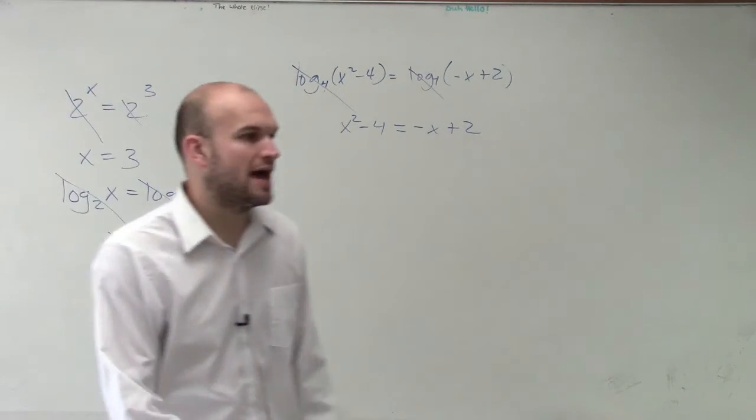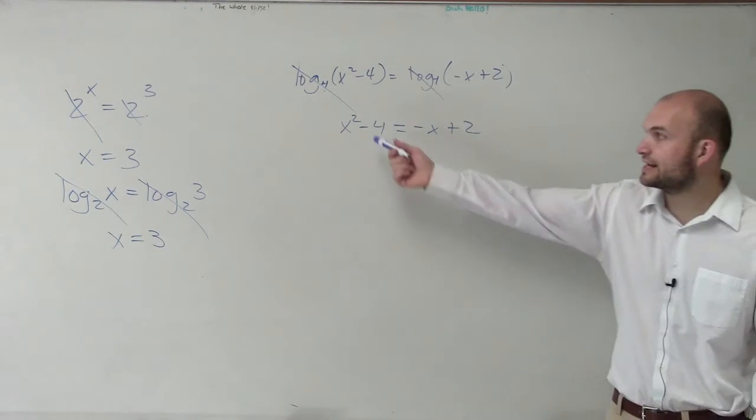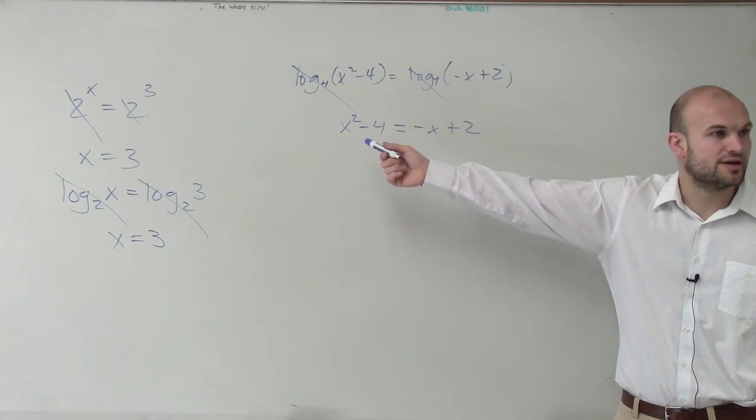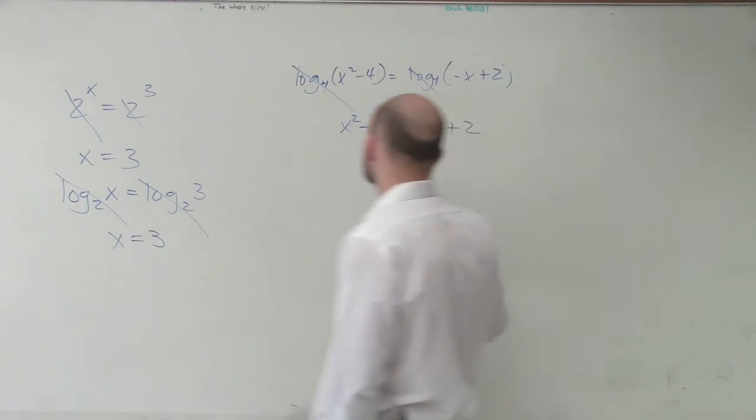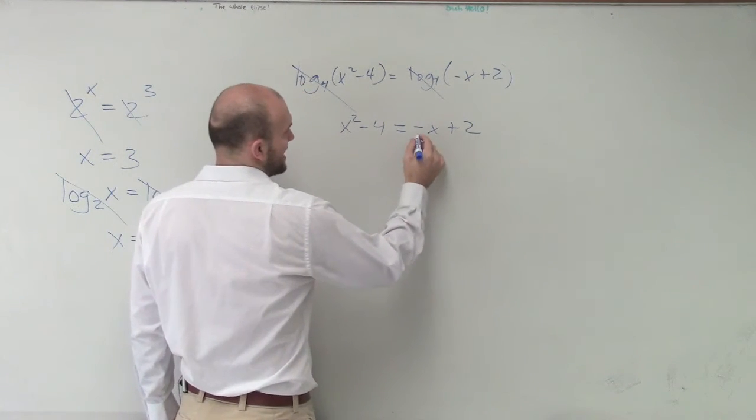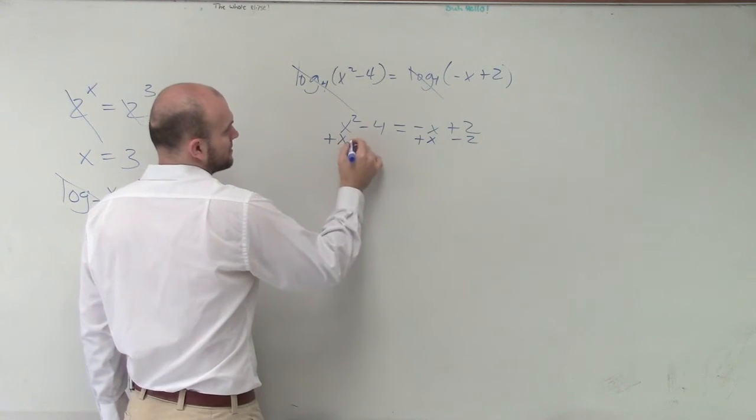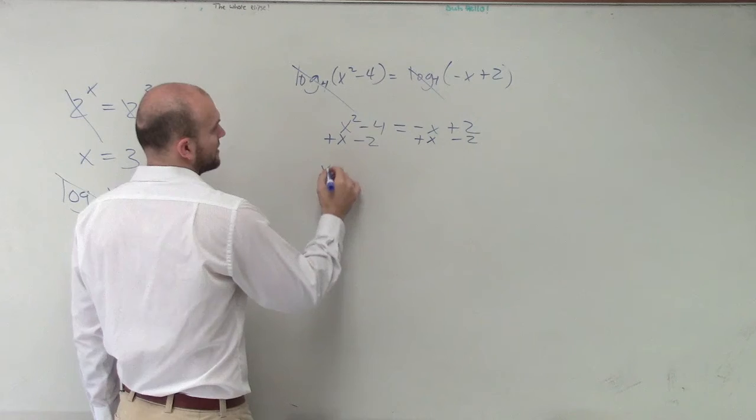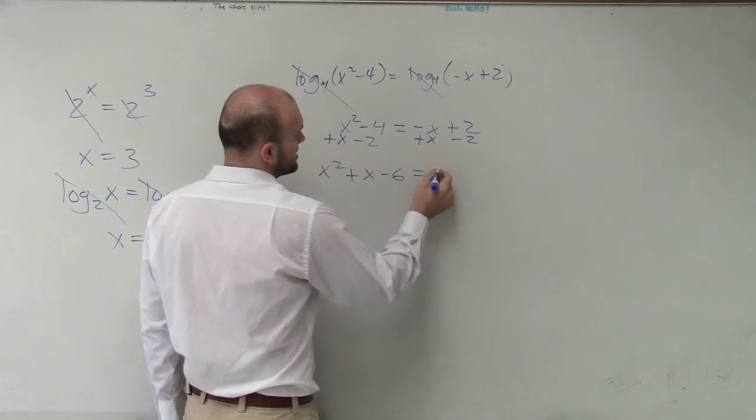Now it comes to an algebra problem where I have to solve this. We know this is a quadratic with the x^2, so now I have to set it equal to 0 and see which ways I can factor. By setting it equal to 0, I'm going to add and subtract x and 2 on both sides. Therefore, I get x^2 + x - 6 = 0.